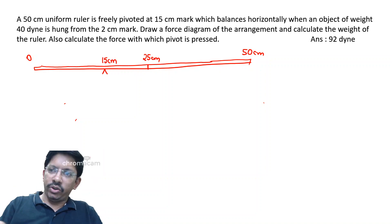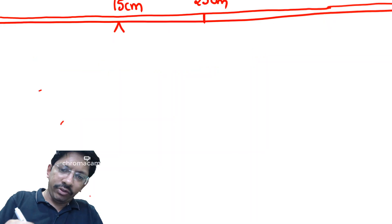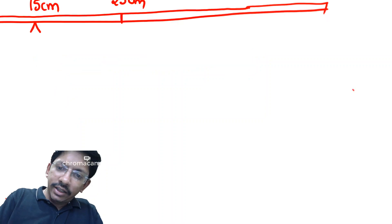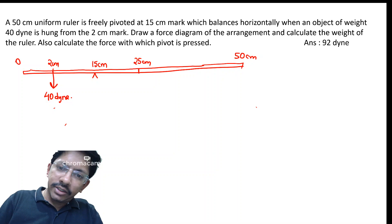It balances horizontally when an object of weight 49 dyne is hung from 2 centimeter. A weight of 49 dyne is acting, and the weight of the ruler will act at 25 centimeter. We have to draw the diagram.